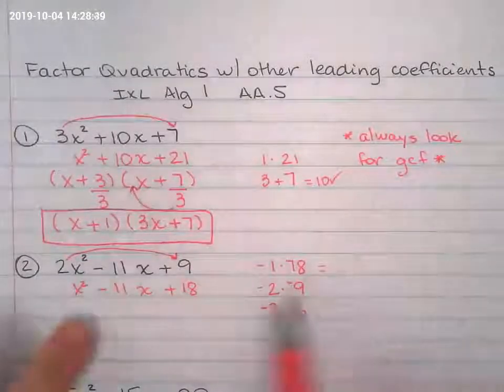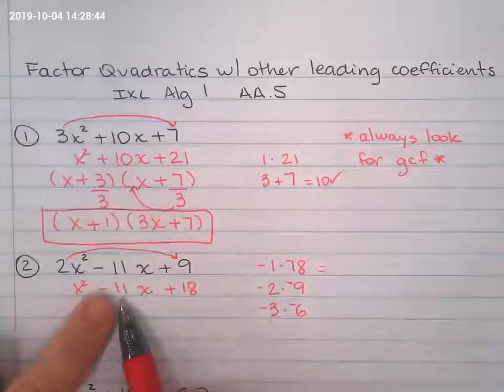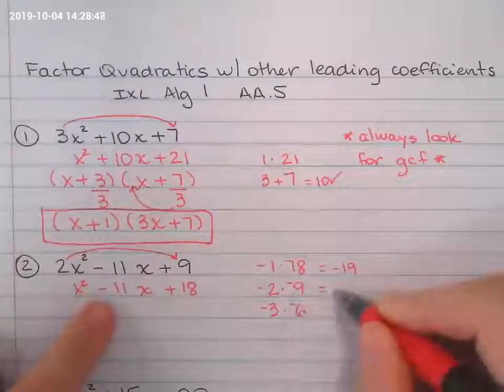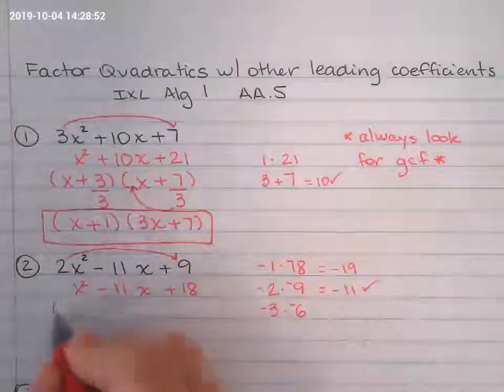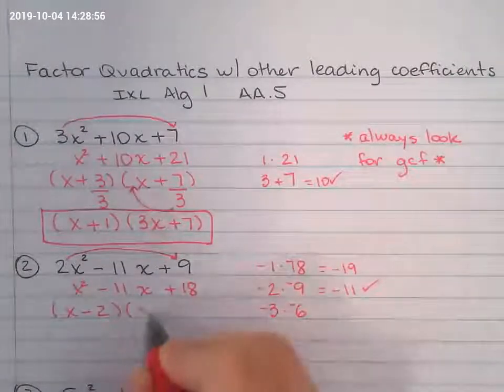So we're looking for those two numbers added together that will add up to negative 11. Here they add up to negative 19. Ah, look at that negative 11 right there. So these are my factors, x minus 2, x minus 9.